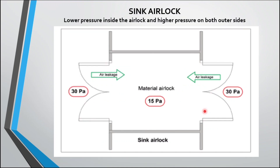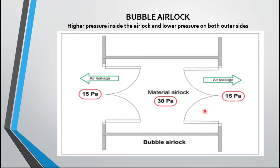In a sink airlock, there is lower pressure inside the airlock and higher pressure on both outside areas. The airlock becomes a sink, meaning air flows from both sides into the airlock. In a bubble airlock, there is higher pressure inside the airlock and lower pressure on both outer sides, so air flows from the airlock outward to outside areas.